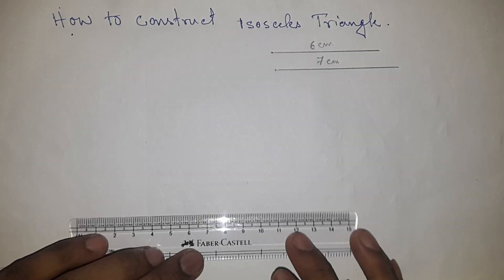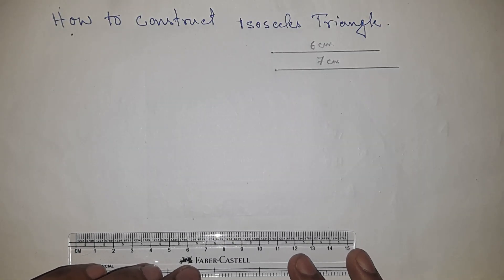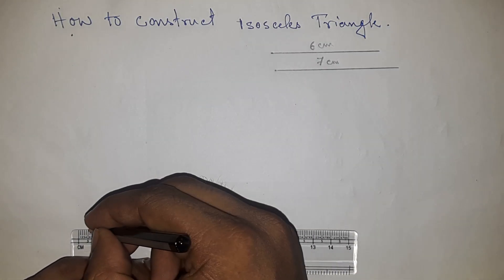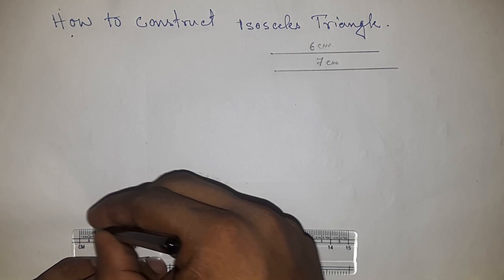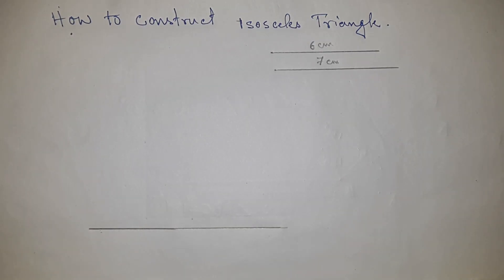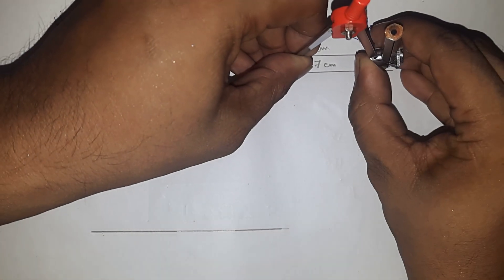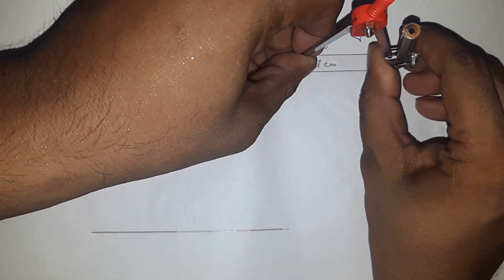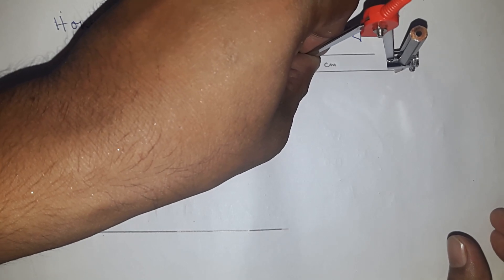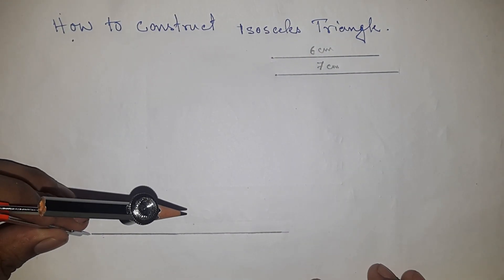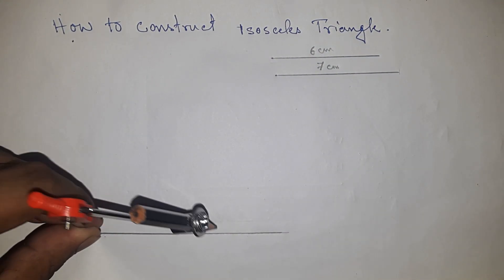First of all, draw a line of any length. Now take the measurement of the greater side, 7 centimeters, by compass and put the compass here.